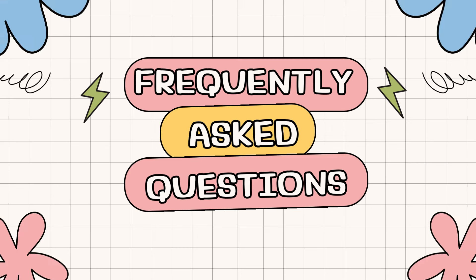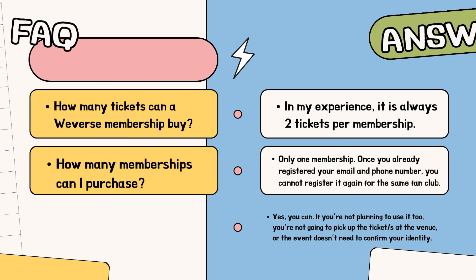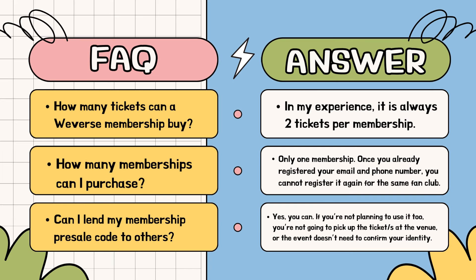Frequently asked questions. How many tickets can a Weverse membership buy? In my experience, it is always two tickets per membership. How many memberships can I purchase? Only one membership. Once you already registered your email and phone number, you cannot register again for the same fan club.